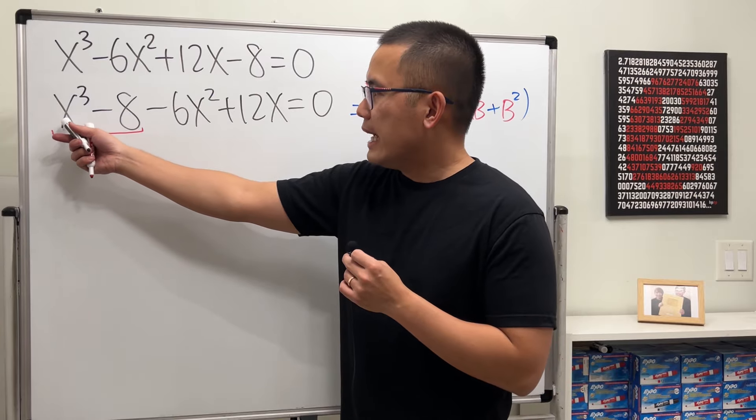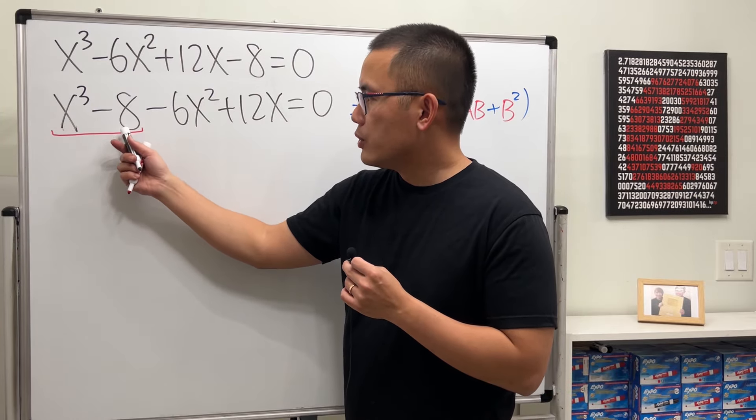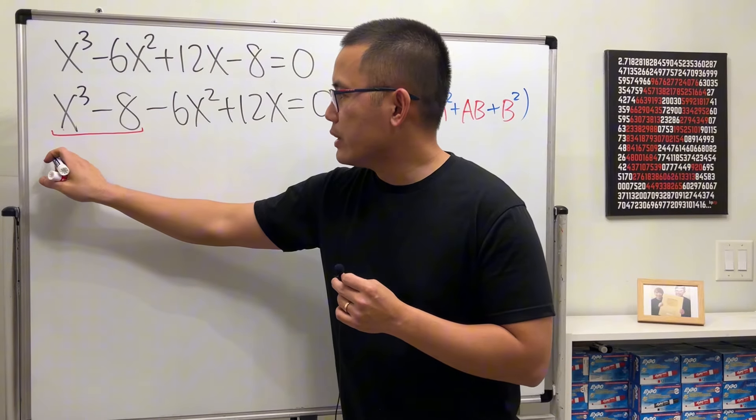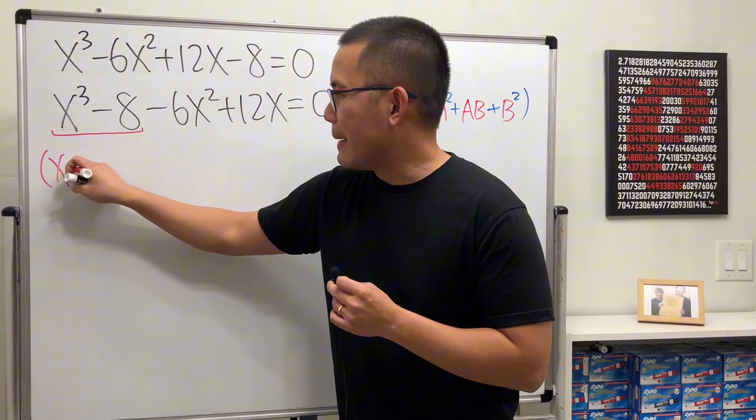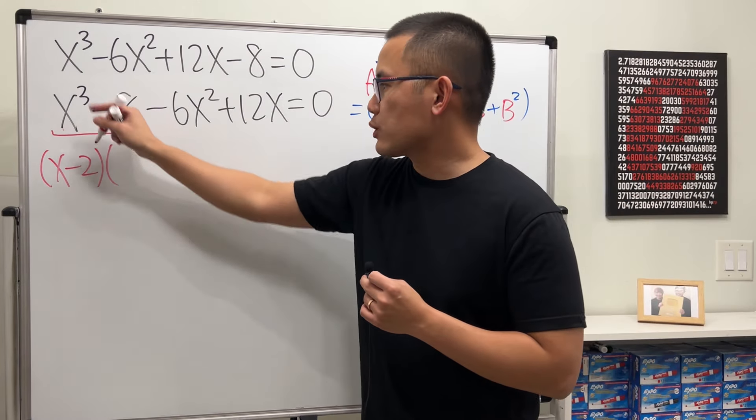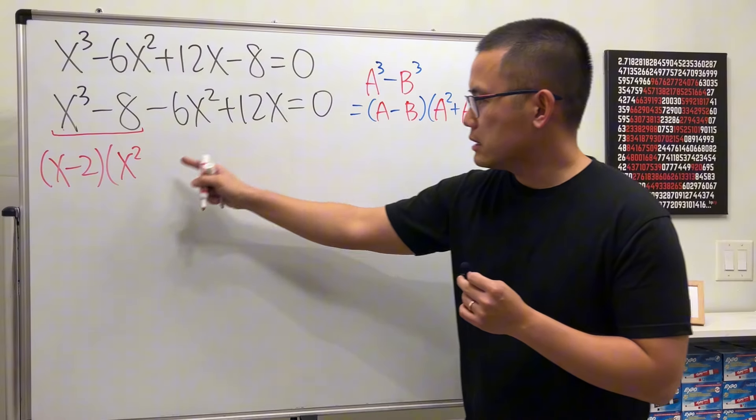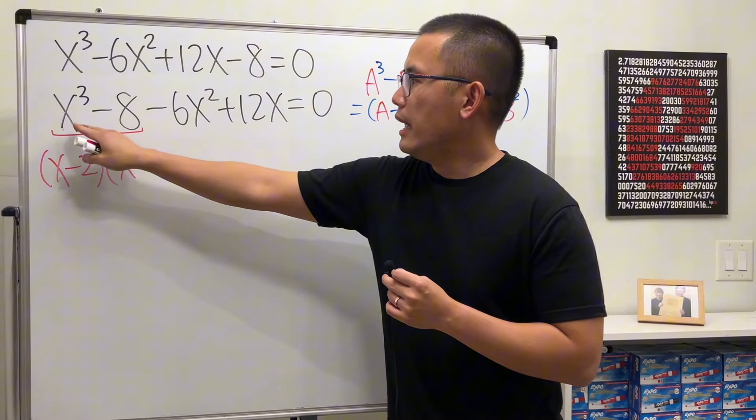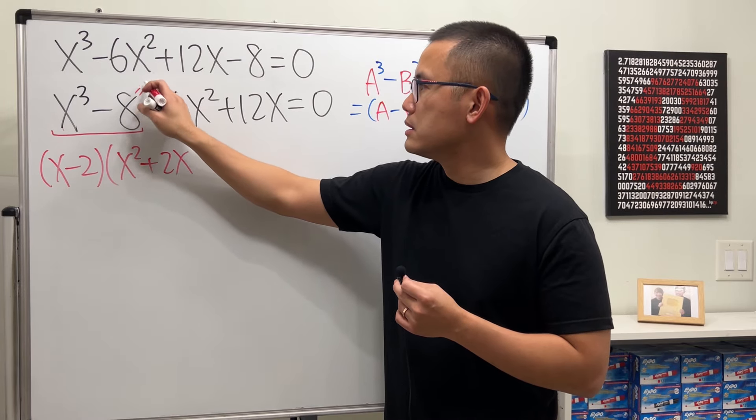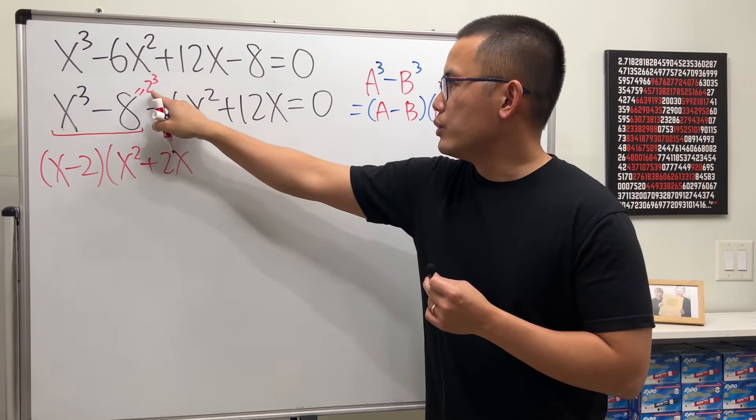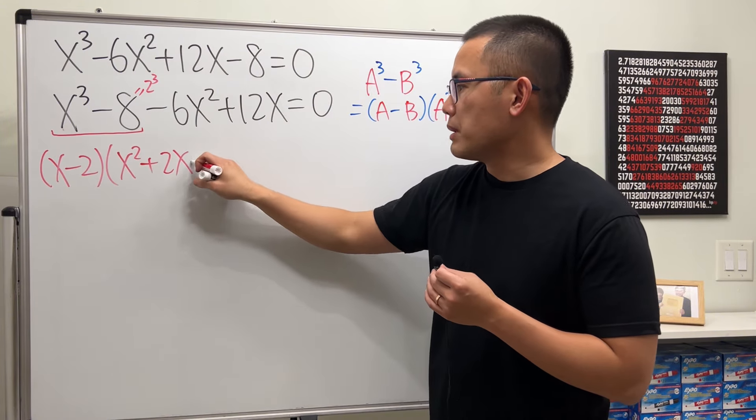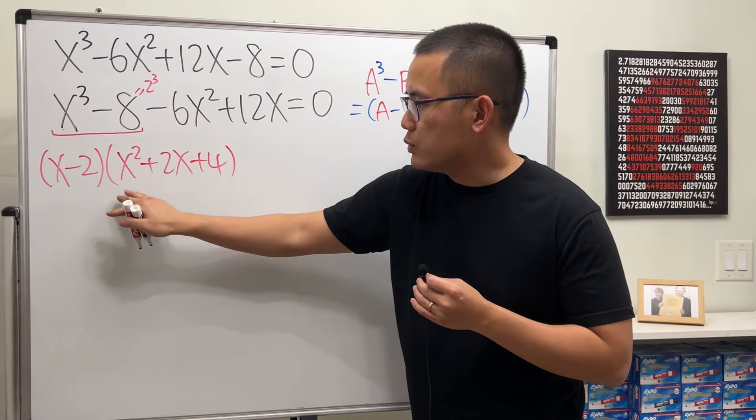So, by looking at x cubed minus 2 cubed, we can factor by using this formula. And we can get x minus 2 times a squared, which is x squared now, and then plus x times 2. So, it's 2x. Because we look at the 8 as 2 cubed. And then lastly, we do b squared, so 2 squared. 2 squared is 4, so plus 4. So, we factor this, we get that.